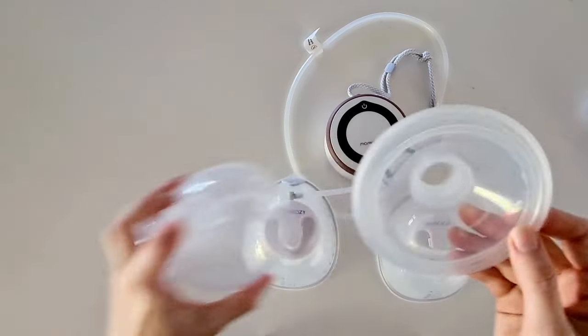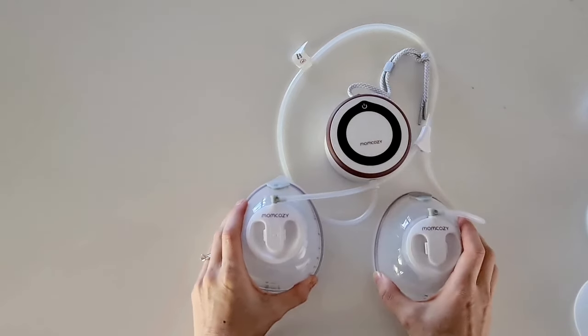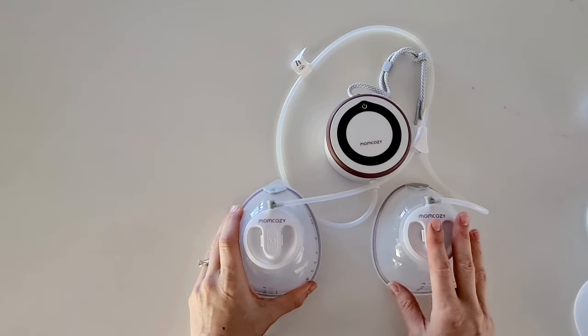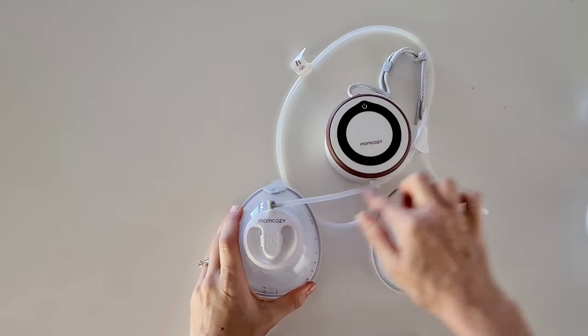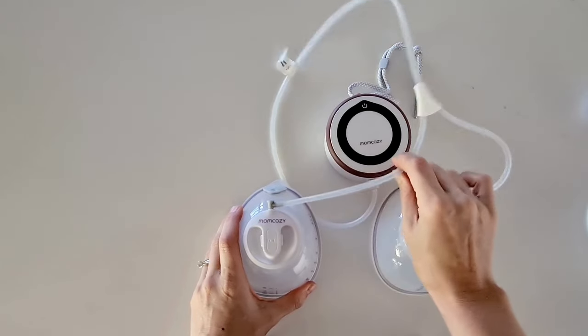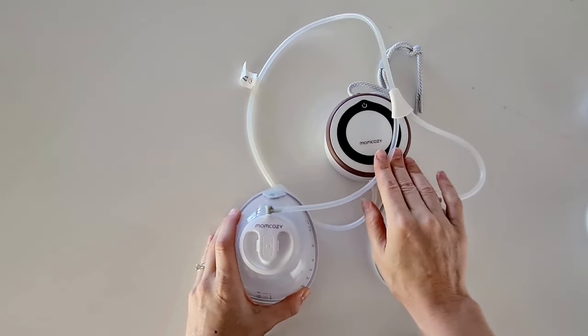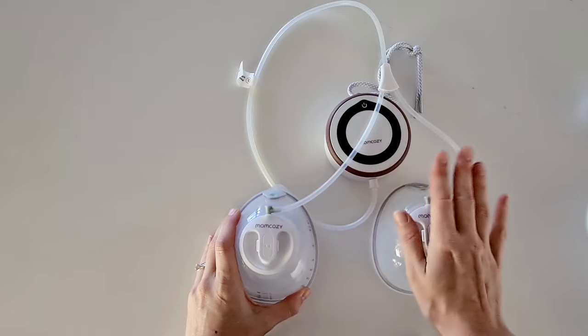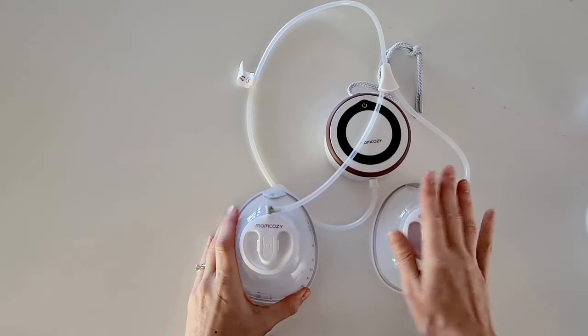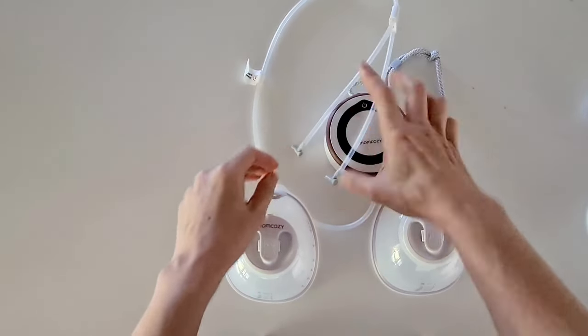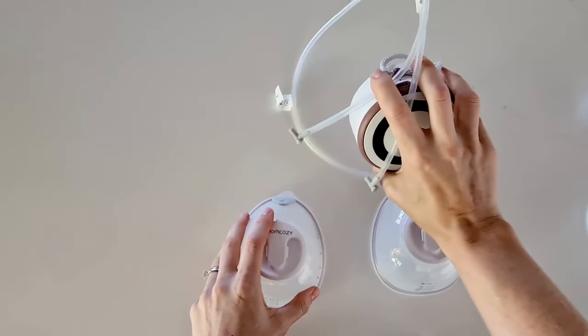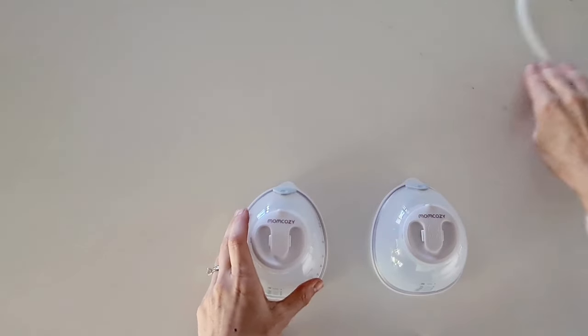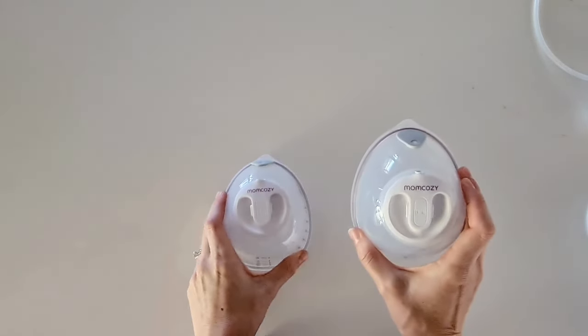Now the V1 and its sister pump the Momcozy V2 are slightly different. These have a tubing. This tubing does not get breast milk in it, so this is a closed system which means the tubing does not come into contact with the breast milk. Therefore we do not need to clean and sterilize it. We simply remove the tubing with the pump motor. Again you can wipe that down with a dry cloth if you need to.